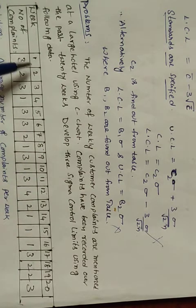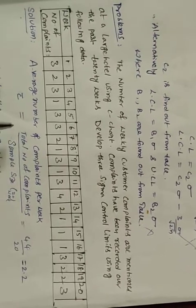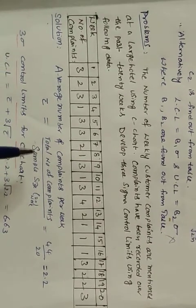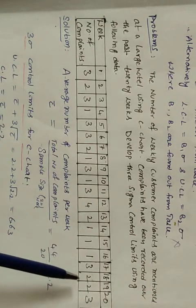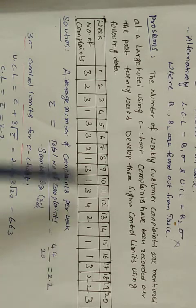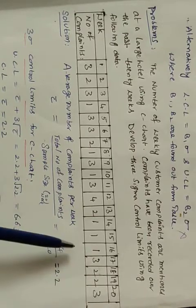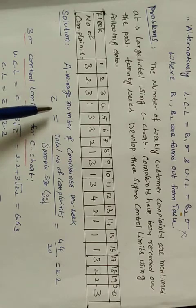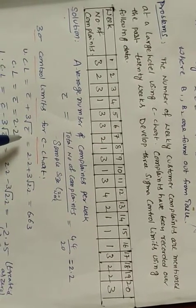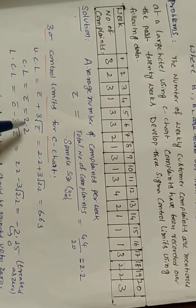For this C chart, data is collected over 20 weeks — Week 1 through Week 20. First, calculate c-bar: add the total number of complaints across all 20 weeks. Adding all values: 3 plus 2 plus 3 plus 1 plus 3 plus 3 plus 3 plus 2 plus 1 plus 3 plus 3... gives a total of 44. Therefore c-bar equals 44 divided by 20, which equals 2.2.